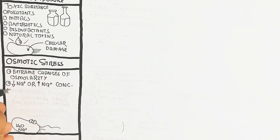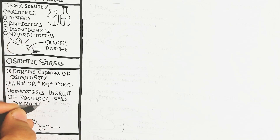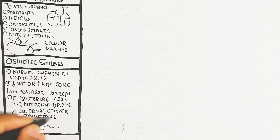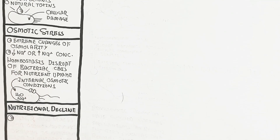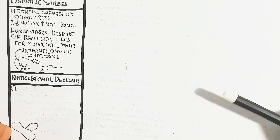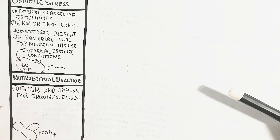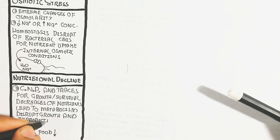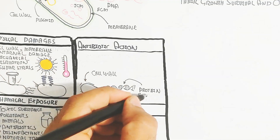Osmotic stress involves extreme changes in osmolarity — sodium concentration can decrease or increase, disrupting constriction and homeostasis. The salt concentration decrease or increase in the bacterial cell changes the internal osmotic condition and leads to cell death. Nutritional decline also causes cell injury: carbon, nitrogen, phosphorus, and trace elements are essential for growth and survival. Decreased nutrients disrupt metabolism, reduce growth and reproduction, and ultimately lead to cell injury and death.